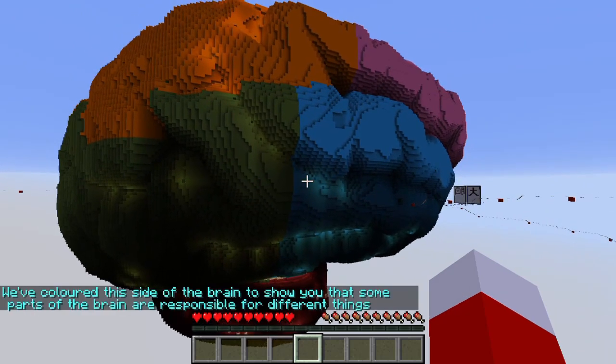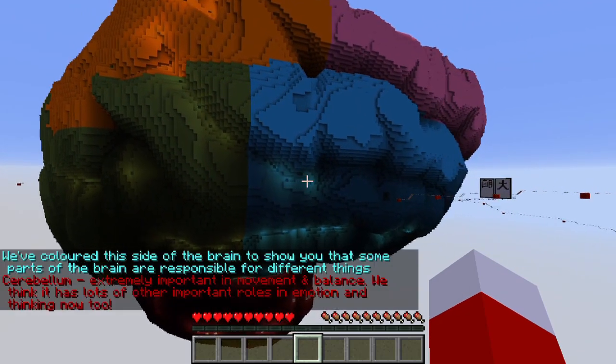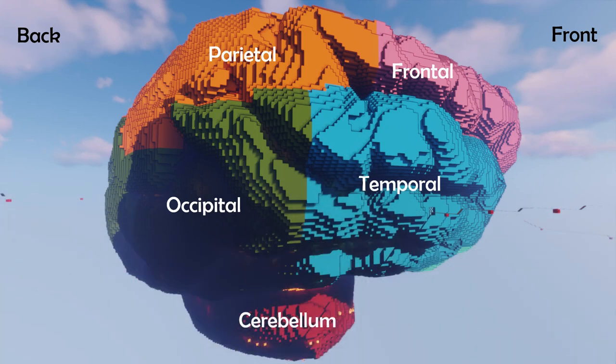The brain is interesting because it's made up of something called neurons — we'll see them later. Each zone of the brain has a different job to do. The red zone is the cerebellum, which is important for movement and balance. The occipital zone in green is to do with helping you see and processing your vision — and it's quite interesting because that's actually at the back of your brain, so your eyes have to send information all the way to the back.